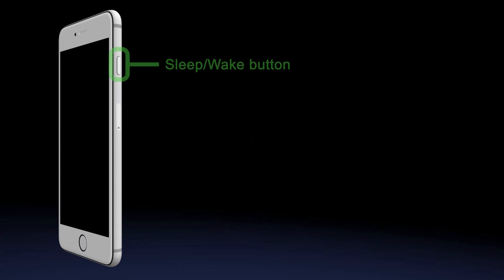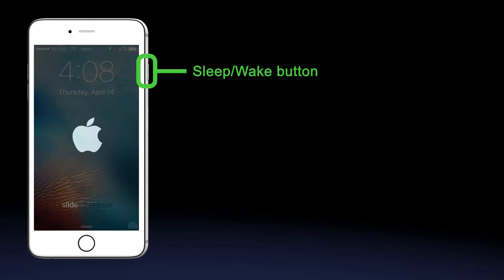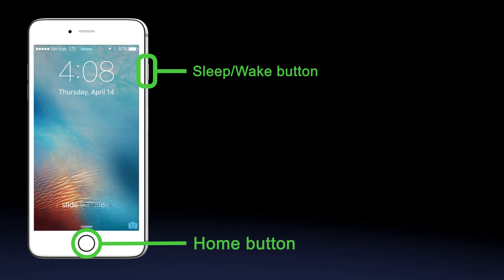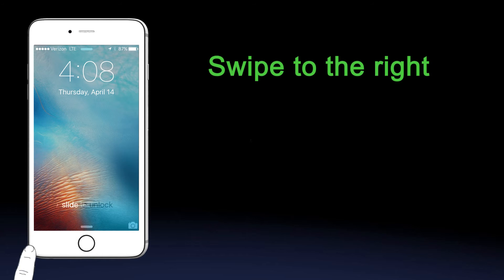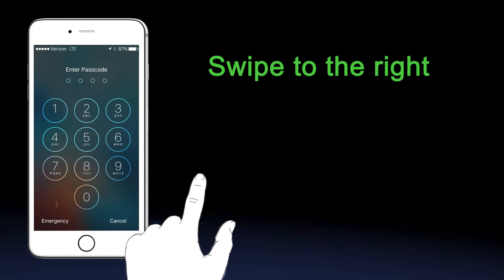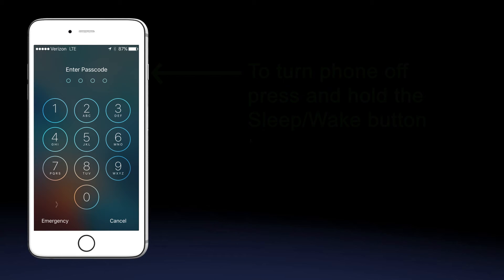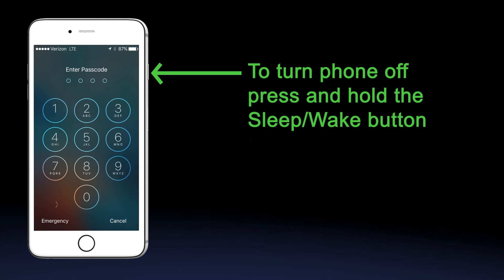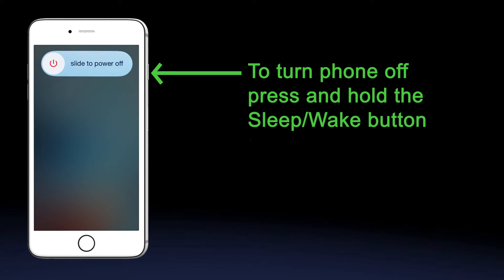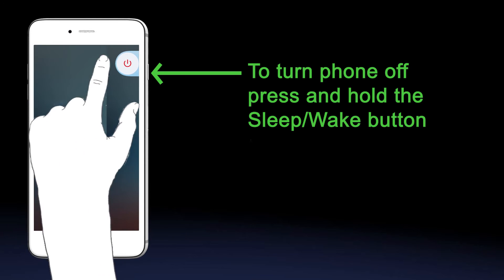To turn your iPhone on, press and hold the sleep-wake button until the Apple logo appears. To unlock your iPhone, press either the sleep-wake or home button, then swipe to the right. To turn your iPhone off, press and hold the sleep-wake button until the slider appears, then swipe to the right.